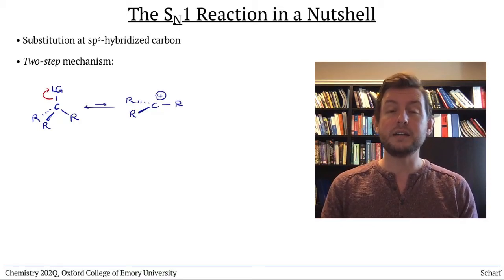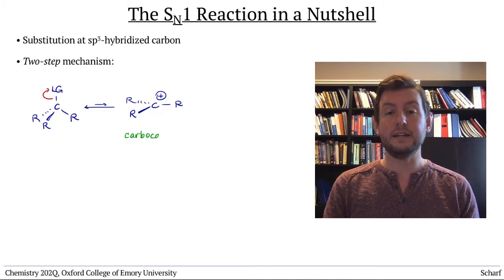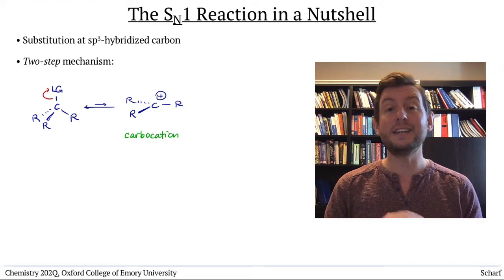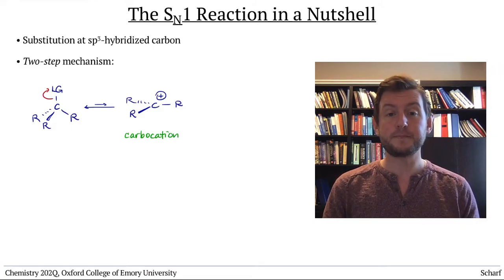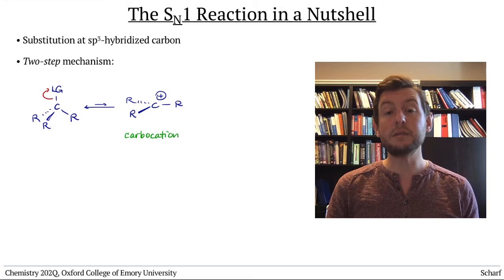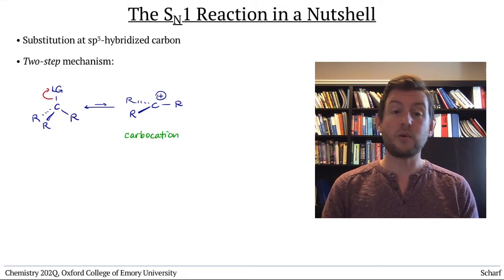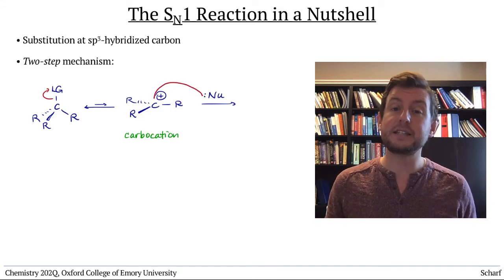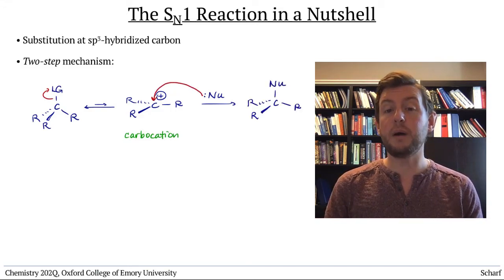This step forms an unstable carbocation, a trigonal planar carbon with an unfilled octet and an empty P orbital. The carbocation is extremely electrophilic, so any molecule with a shareable pair of electrons can satisfy it, making a new bond to that carbon.